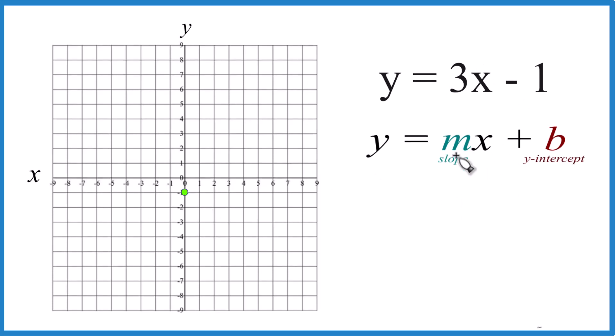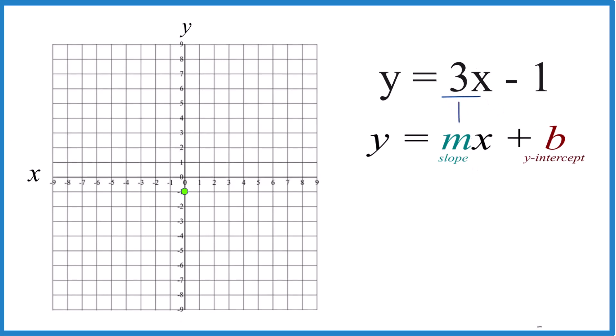For 3, the slope m, it's helpful to think of that as 3 over 1, because now you can say you have rise over run. So we'll go to our y-intercept here. We'll rise 1, 2, 3, go over 1.